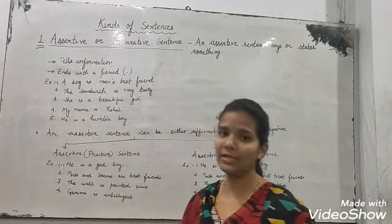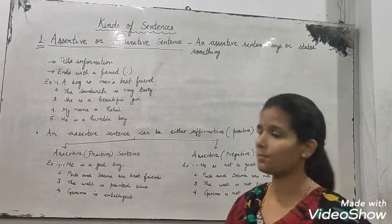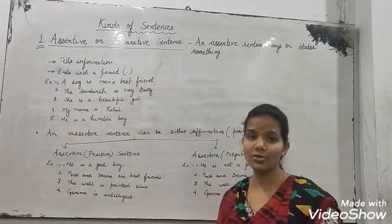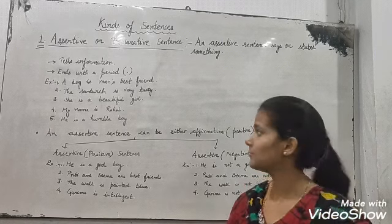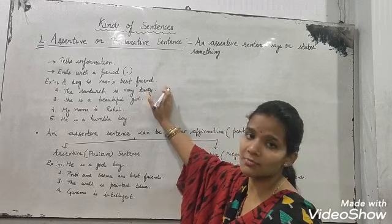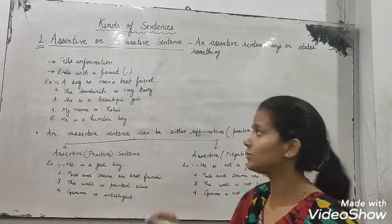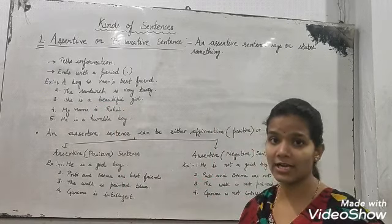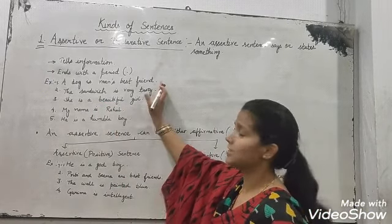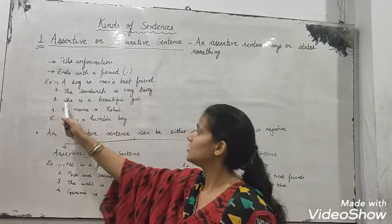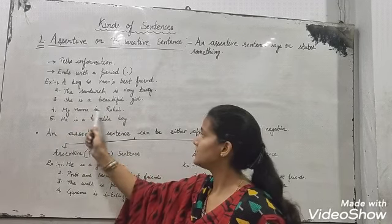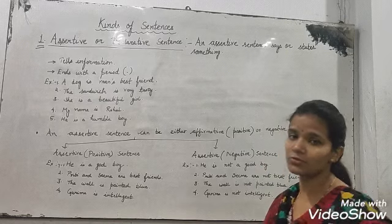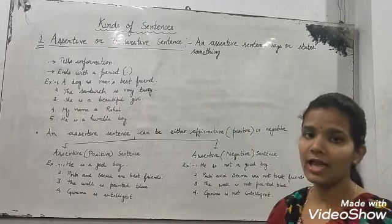Assertive sentences end with a period — that is, a full stop. For example: 'A dog is man's best friend' gives you information that a dog is man's best friend, and it ends with a full stop, so it is an assertive sentence. 'The sandwich is very tasty' — it is giving you information. Other examples: 'She is a beautiful girl', 'My name is Rahul', 'He is a humble boy'. These all are examples of assertive sentences giving information in a form of statement ending with a period.